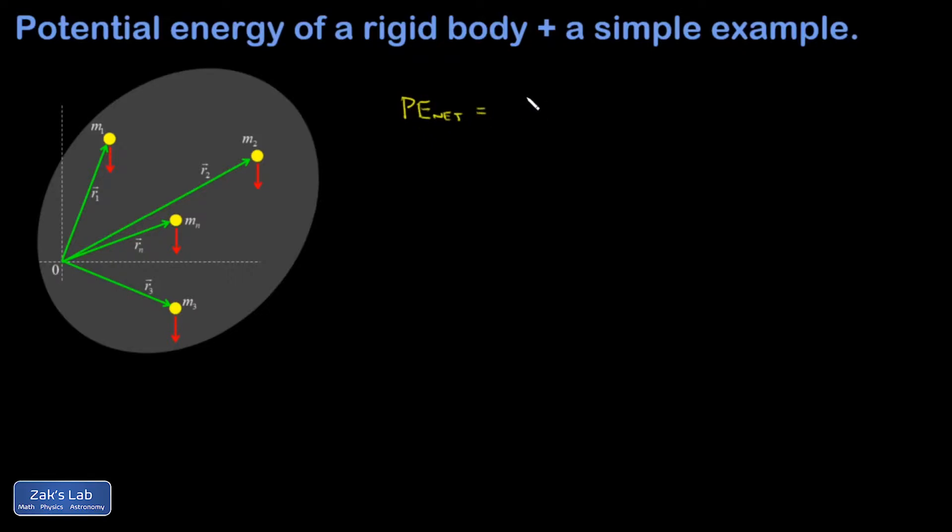So I'll call it PE net. And that's going to be the sum of the potential energies of all these individuals. I put Y equals 0 right here. And then the height of mass 1 is going to be Y1. The height of mass 2 is Y2, and so on and so on. And I've broken it into N different particles.